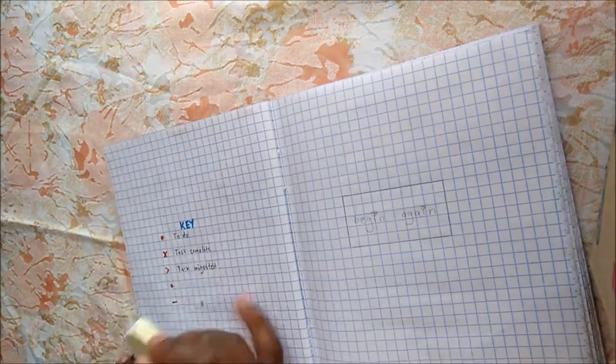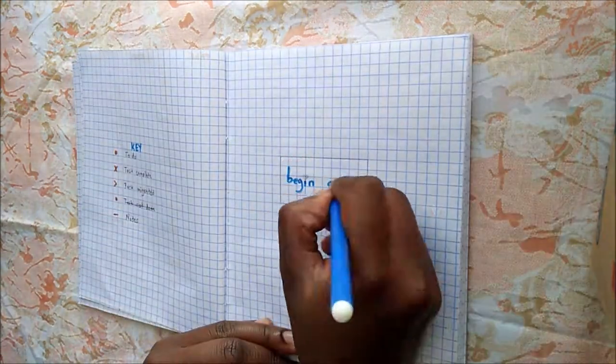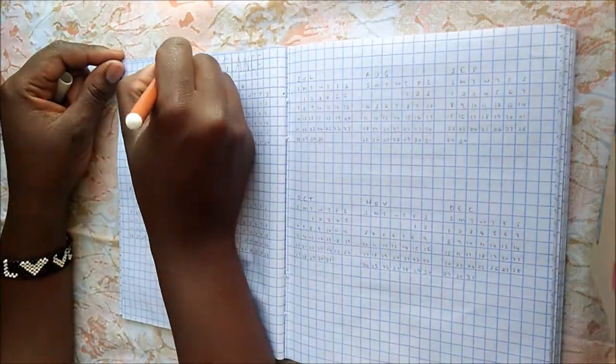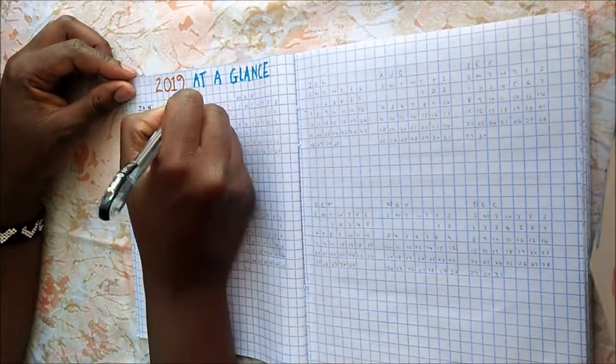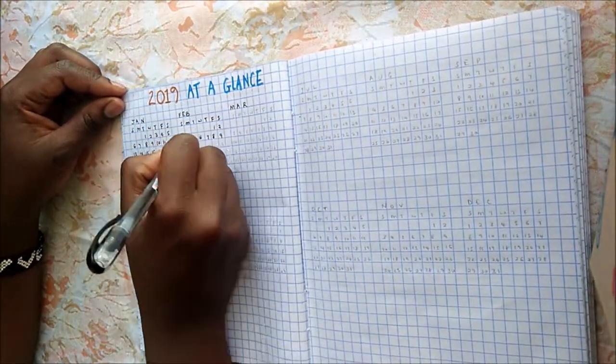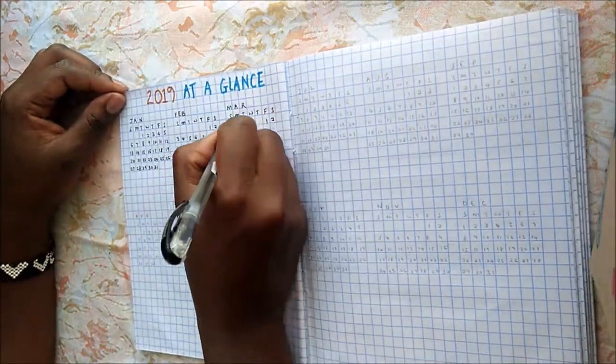Then I have my 2019 theme, which is simple but resonates with what I want for my year. Here I am creating my calendar, and man isn't it tedious, but it has to be done. So if you like these kinds of planning videos, please hit that thumbs up button.